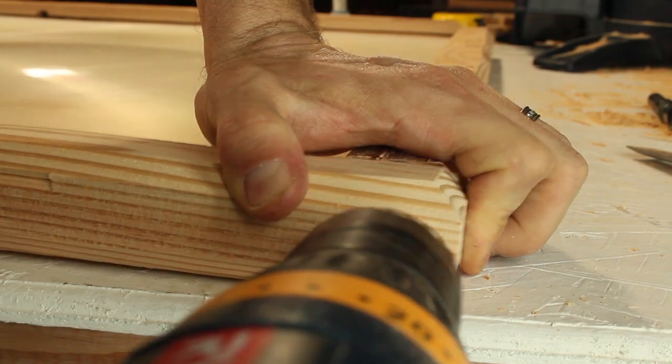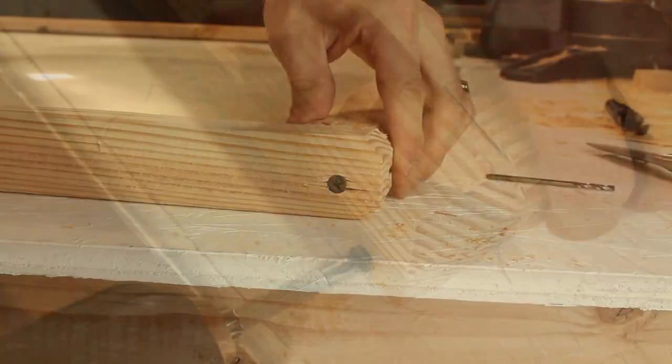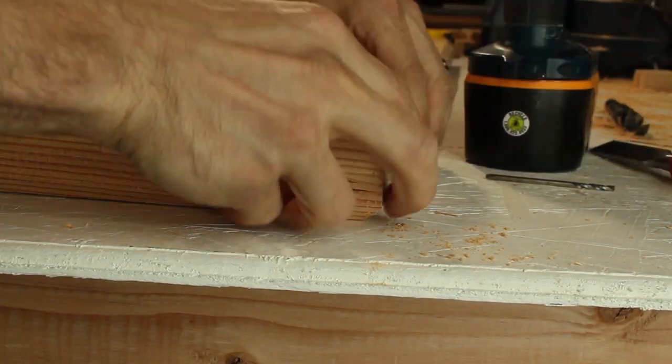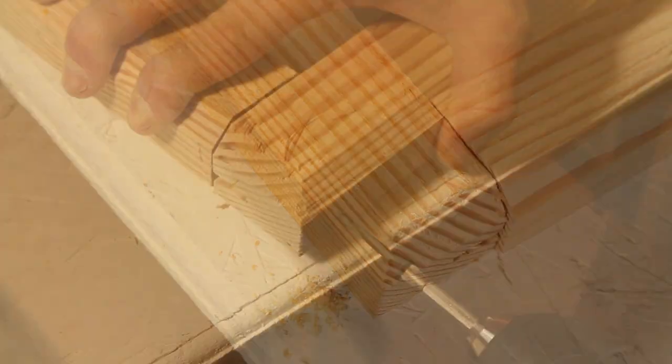When we've got one of the corners lined up, we can drill a pilot hole and add a 3-inch wood screw. That's holding well, so let's repeat that on the other three corners. Drilling these holes first helps prevent the wood from splitting when the screws go in.